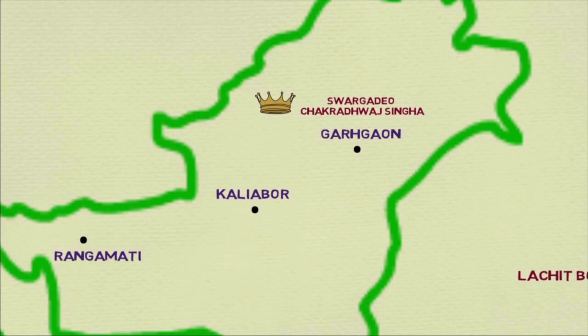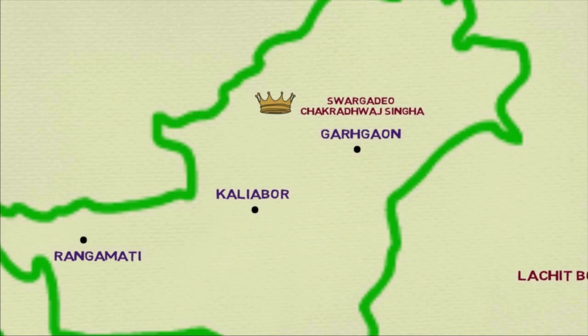As per the Ahom administrative system, the Borphukan was actually the governor of the territories west of Koliabur, and any military threat from that side was to be handled by him unless superseded by a different officer under a royal decree. This short video does not give me the luxury to delve deeper into the Ahom ranks and their administrative systems — I will try to make a separate video on that soon.